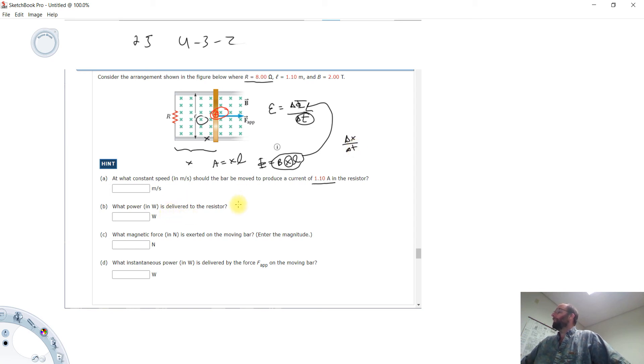Power at the resistor. So power, remember, is you can either use I squared R or current times voltage, magnetic force on the moving bar.